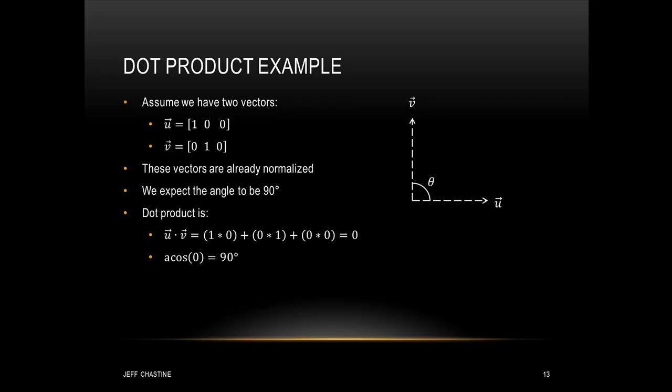Let's see some examples. Assume u is the vector (1, 0, 0) and v is (0, 1, 0). These vectors are already normalized with length 1, and we should expect the angle to be 90 degrees. Computing component-wise: 1×0 + 0×1 + 0×0 = 0. That 0 doesn't represent the angle — it represents the cosine of the angle. Taking the arc cosine of 0 gives us 90 degrees.